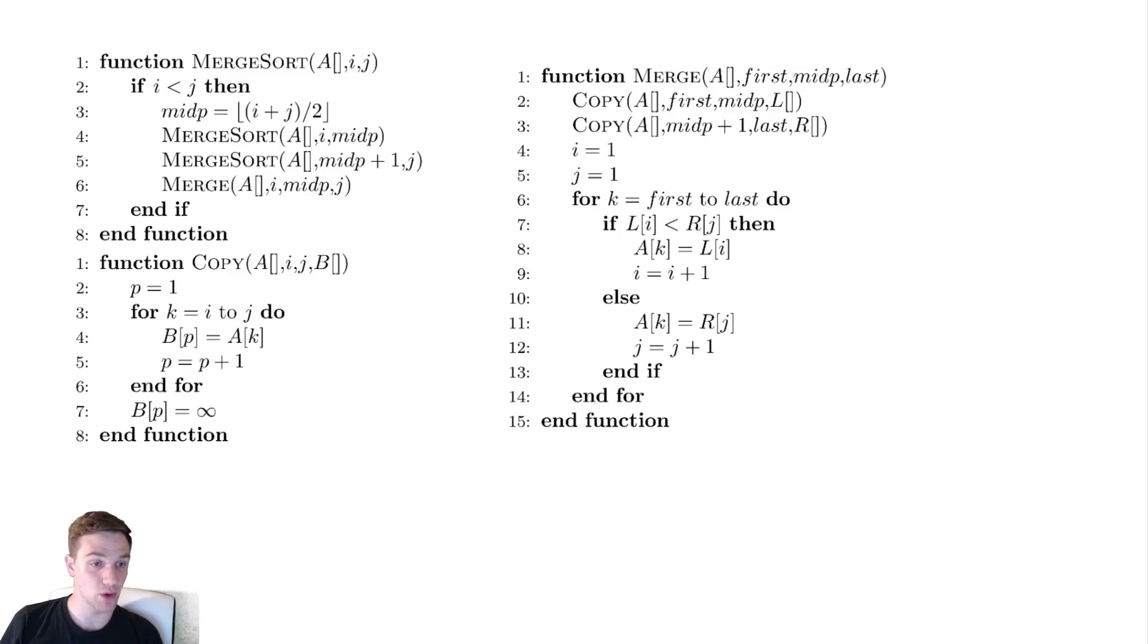The way that this will work is we will take the values of those two sorted arrays, copy them into two new arrays, L for the left values and R for the right values, and we will then iterate over those two arrays simultaneously